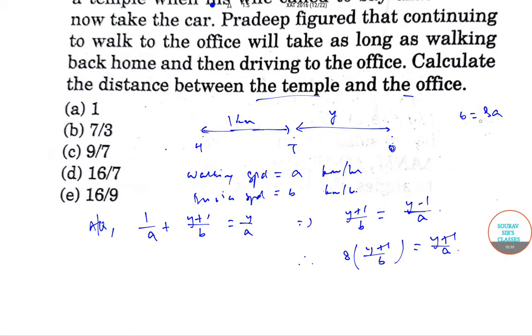And putting this value in this equation, we get y plus 1 by 8a is equal to y minus 1 by a. So a cancels out and on solving we get y to be equal to 9 by 7 km.